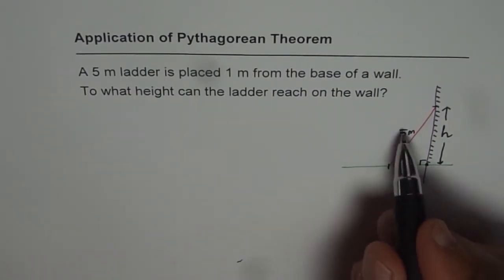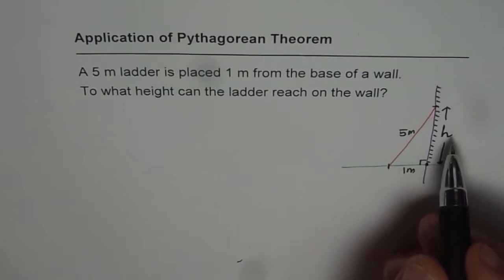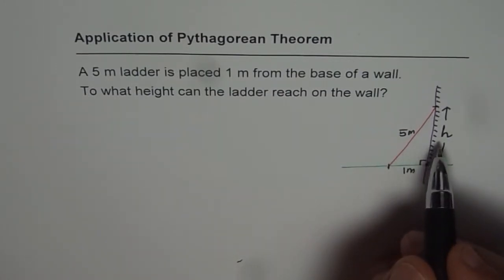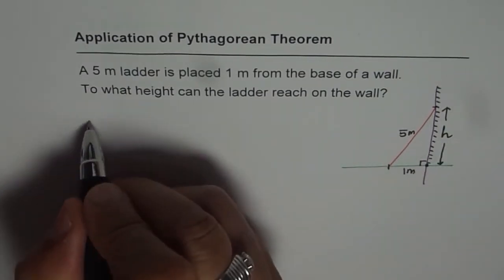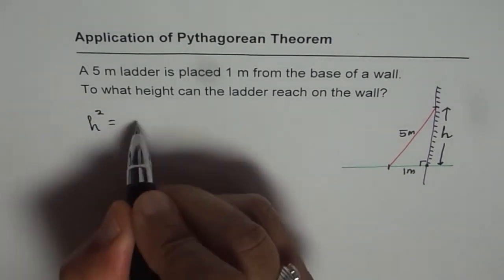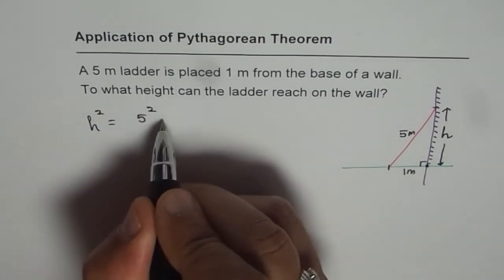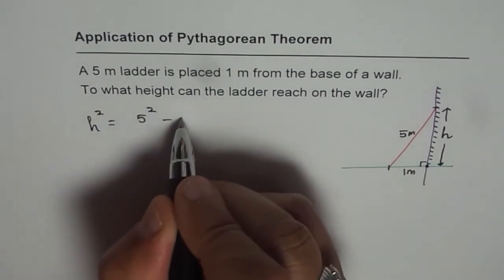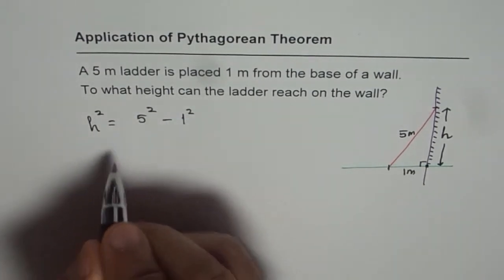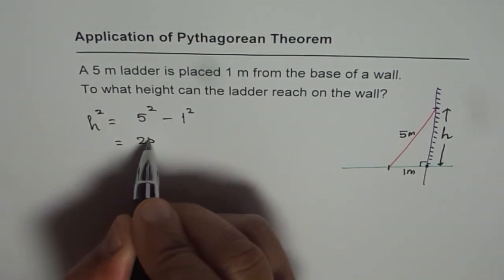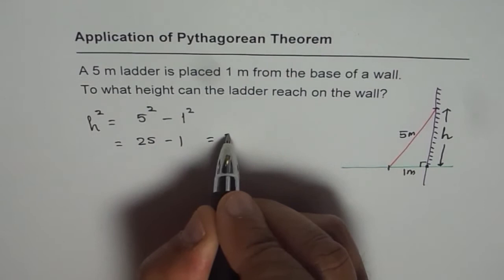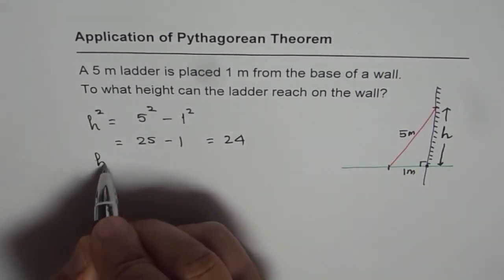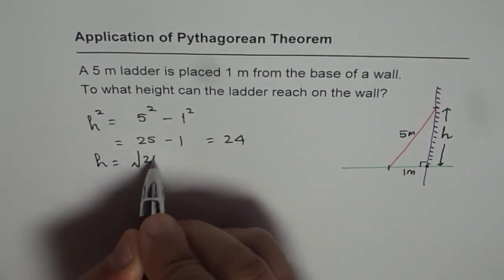So we know two sides of a right triangle. We need to find a shorter side. Since we need to find the shorter side, we can write H square equals to difference of squares between hypotenuse and one of the sides given. That is 25 minus 1, which is 24. So H is equal to square root of 24.